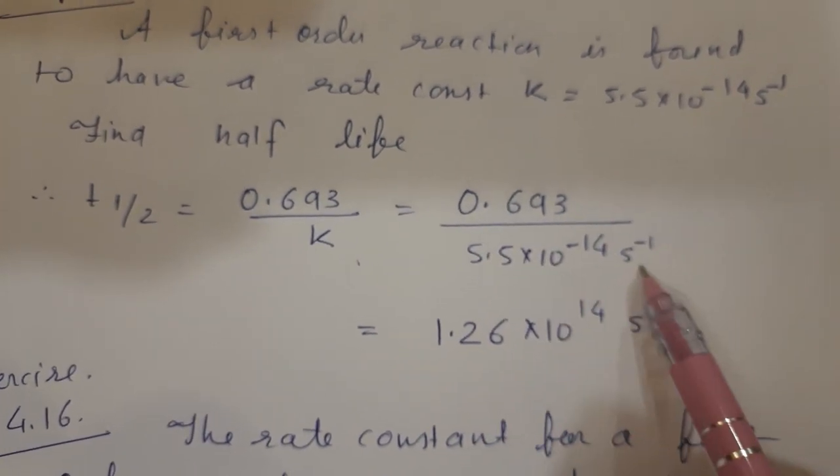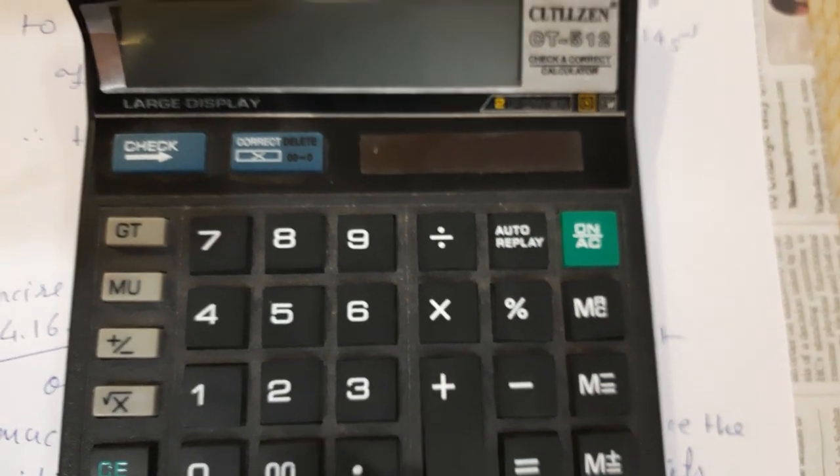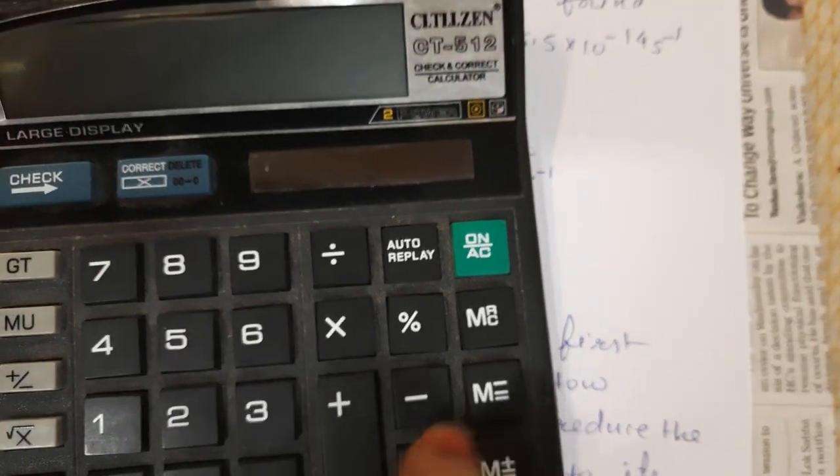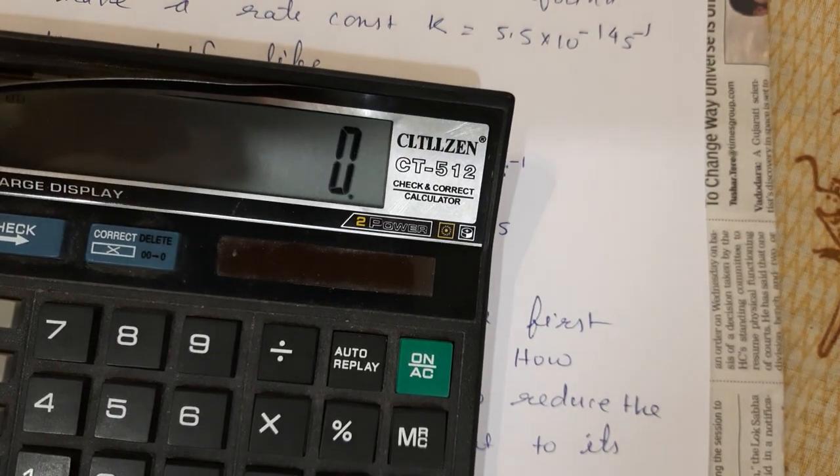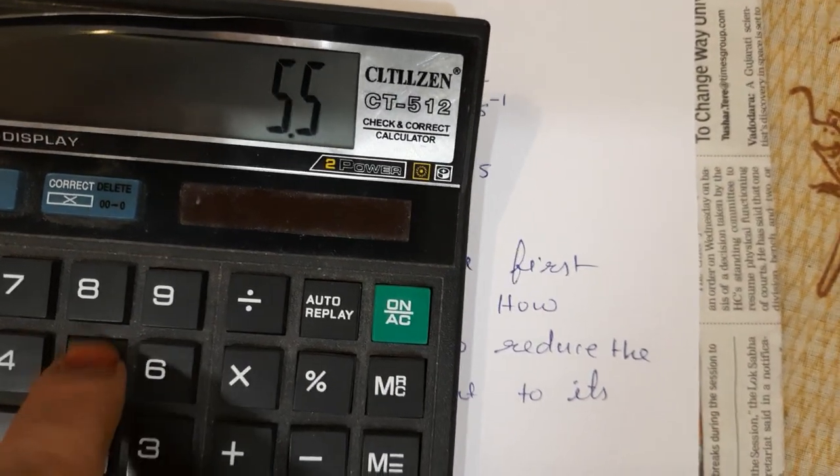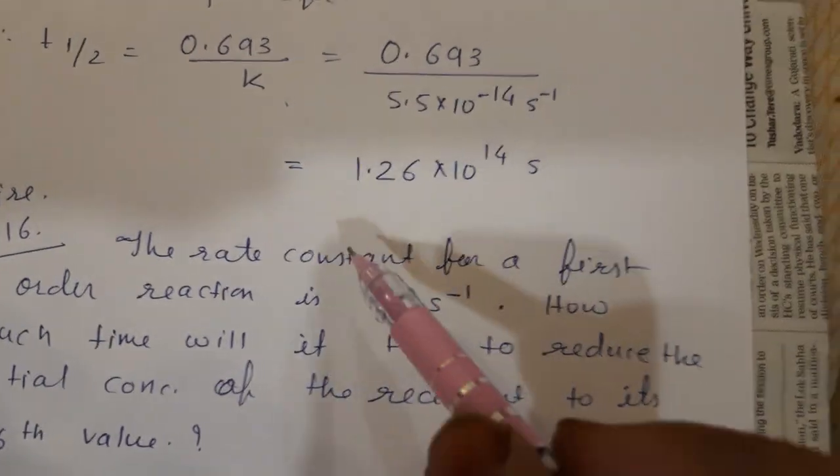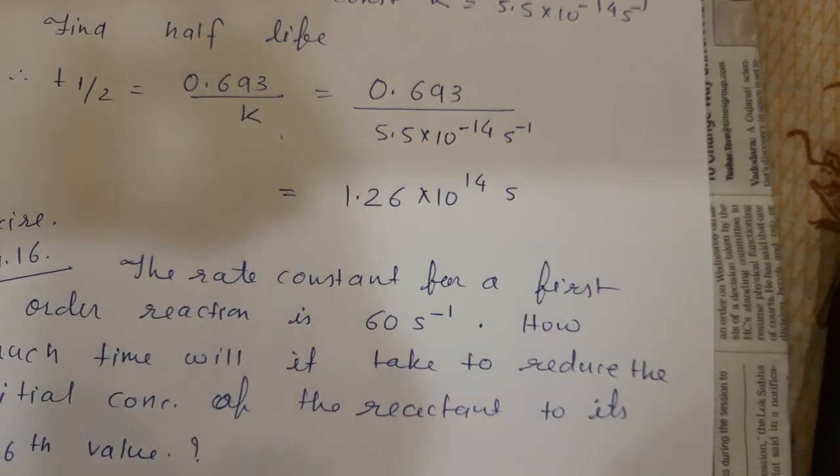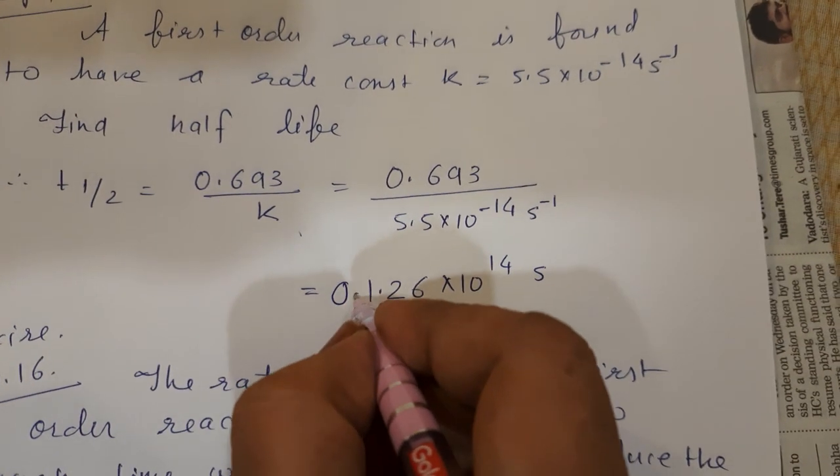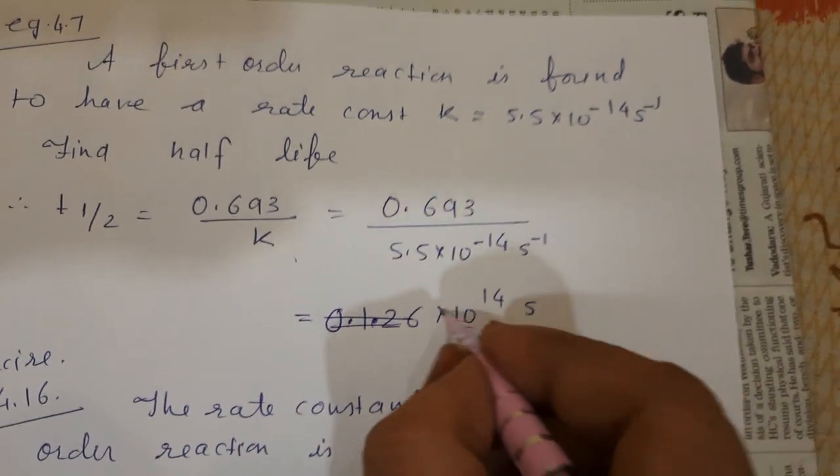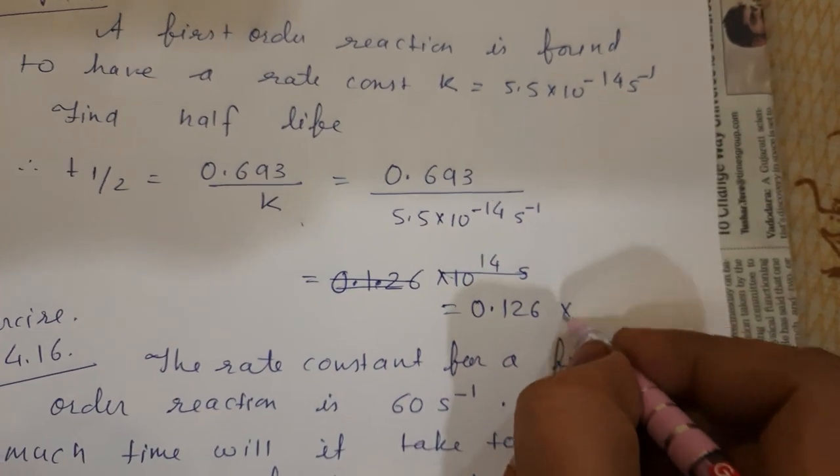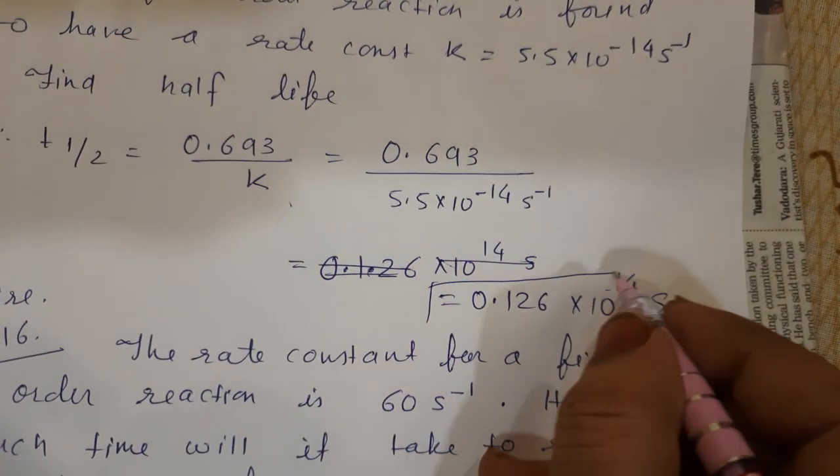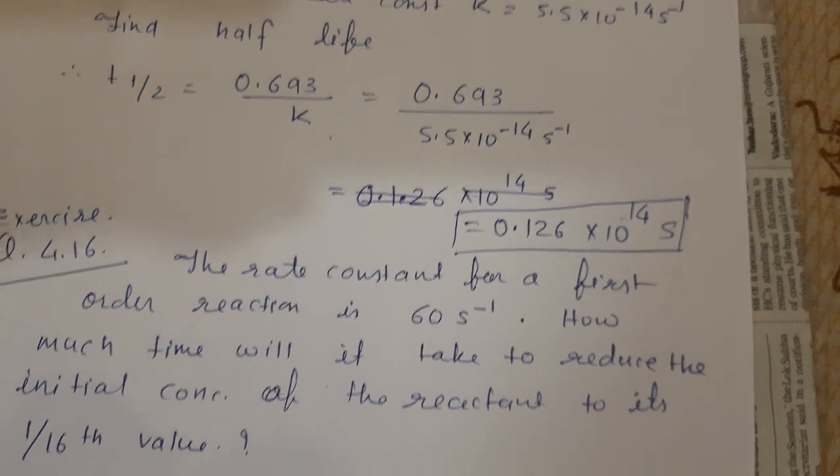Divide 0.693 by 5.5, which equals 0.126. So this is 0.126 times 10 to the power 14. Minus 14 will go up, so it's plus 14, and the unit is seconds. This is the half-life.